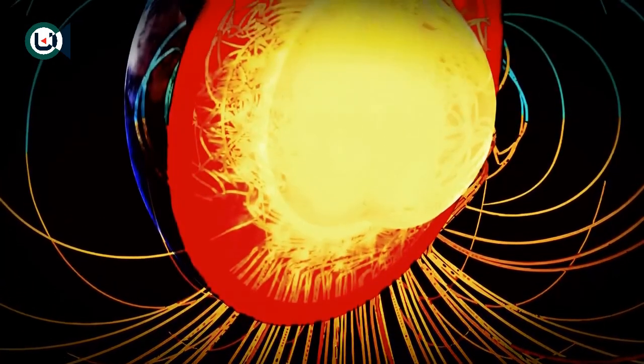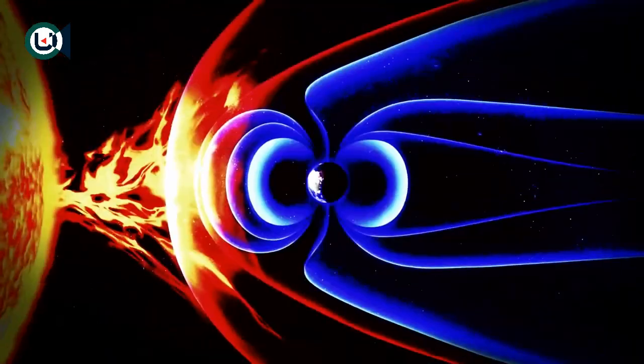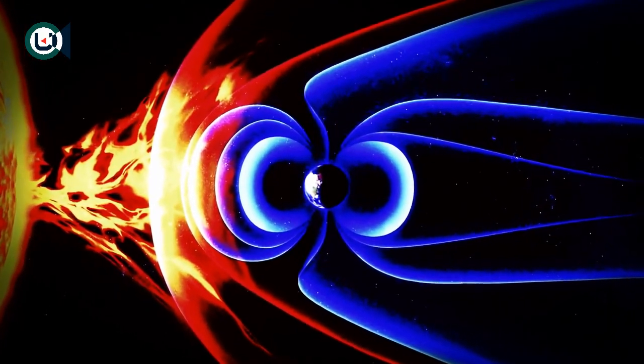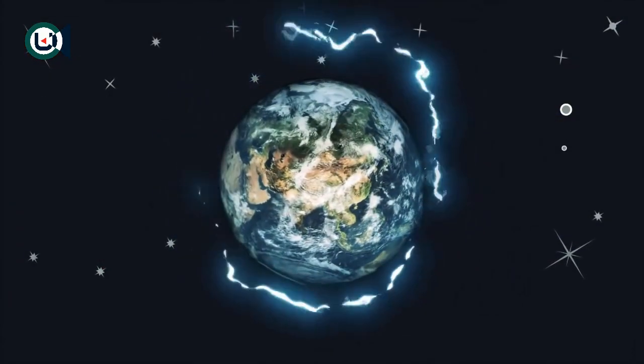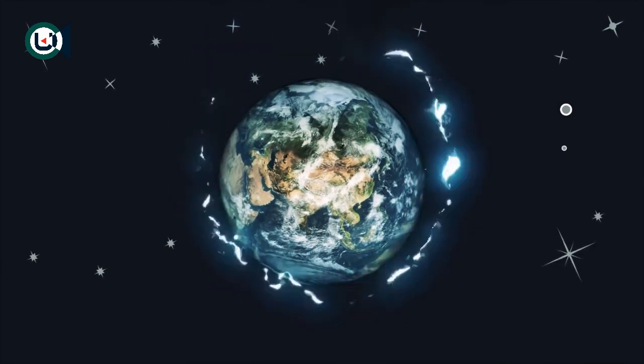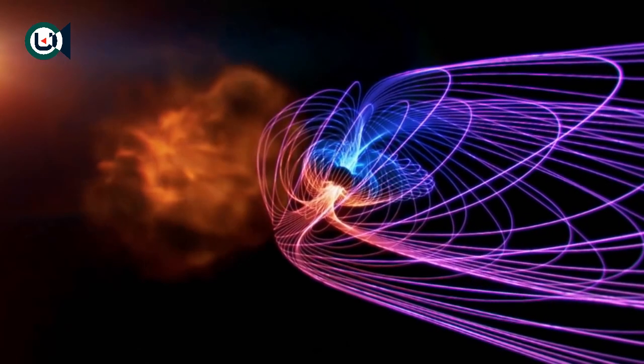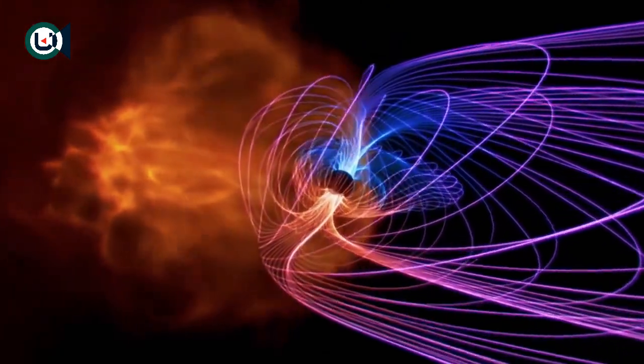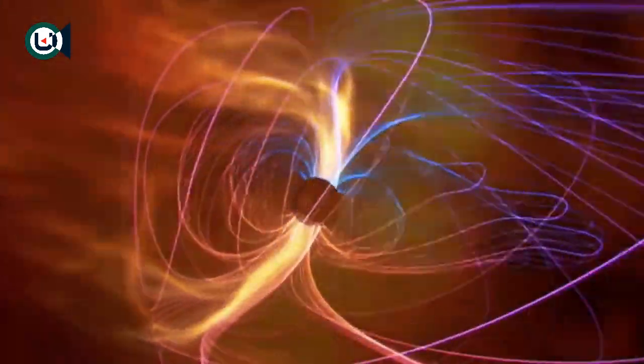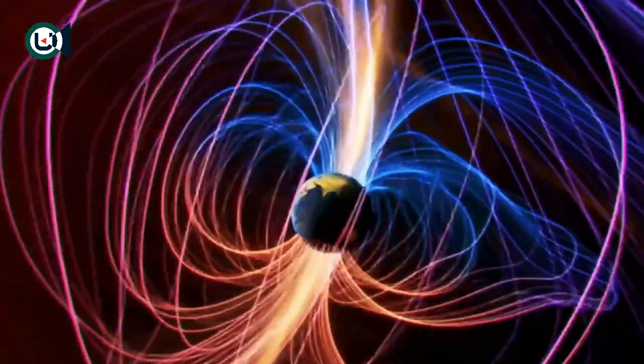The next thing that would likely happen is that the magnetic field of the Earth would stop regenerating and slowly decay over time. The reason for this is because the magnetic field of the Earth is generated by a dynamo effect that involves its rotation. Our magnetic field plays a huge role in keeping our atmosphere intact, and this magnetic field also protects the Earth from cosmic rays.